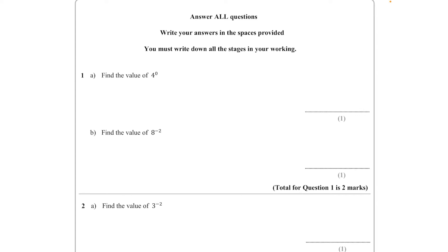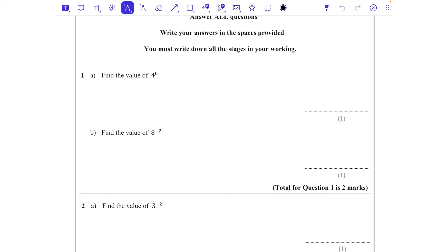This topic is fractional and negative indices — a really common topic on the non-calculator paper, because if you have a calculator you can just type it in. We'll start with question 1a: find the value of 4 to the power of 0. Anything to the power of 0 equals 1, so the answer is 1. x to the power of 0, 4 to the power of 0 — anything like that equals 1.